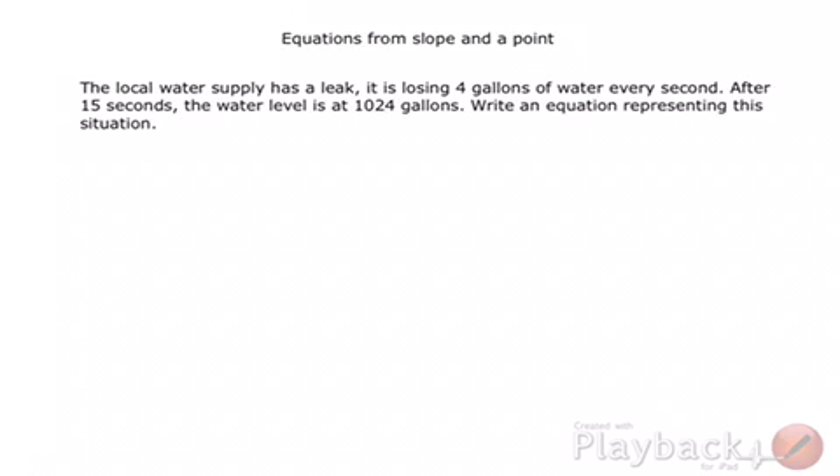If I think real quickly, it's losing 4 gallons of water every second. What that right there is implying is that we have a constant rate of change. Every single second that goes by, 4 more gallons. That's a constant rate of change, which indicates that this is a linear situation. I'm just going to go ahead and label that. That's my slope. My slope is 4, 4 gallons per second.